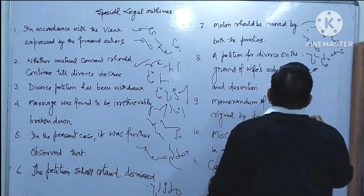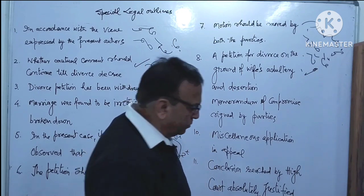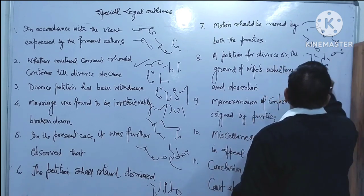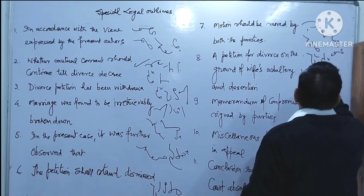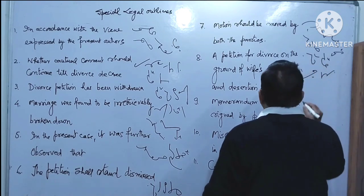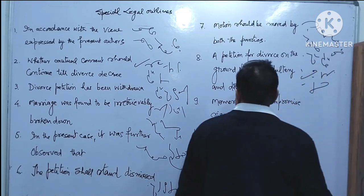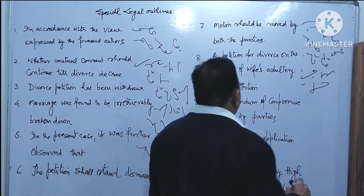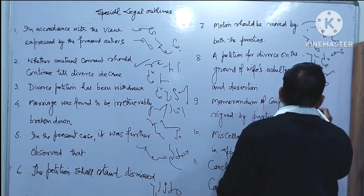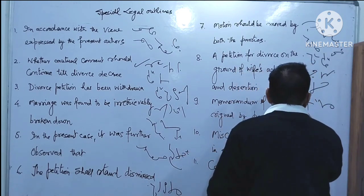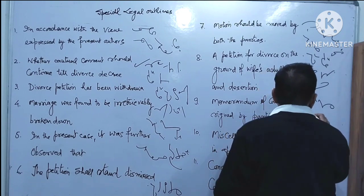A petition for divorce on the ground of wife's adultery and desertion. Memorandum of compromise signed by parties.